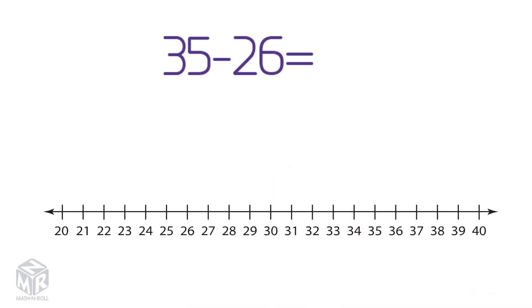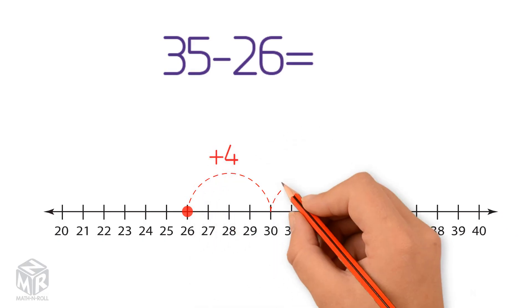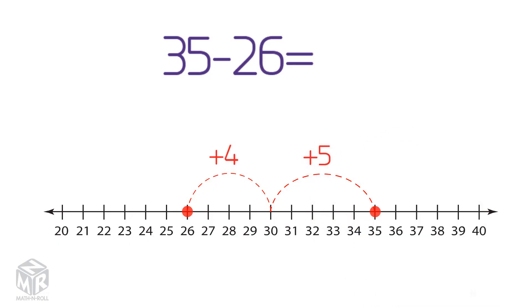Let's try an example. 35 minus 26. Draw a picture to show the problem. Count up from the number you are subtracting to find the difference. Start at 26. Count up 4 to 30. Then count up 5 more to 35. 4 plus 5 equals 9. So 35 minus 26 equals 9.